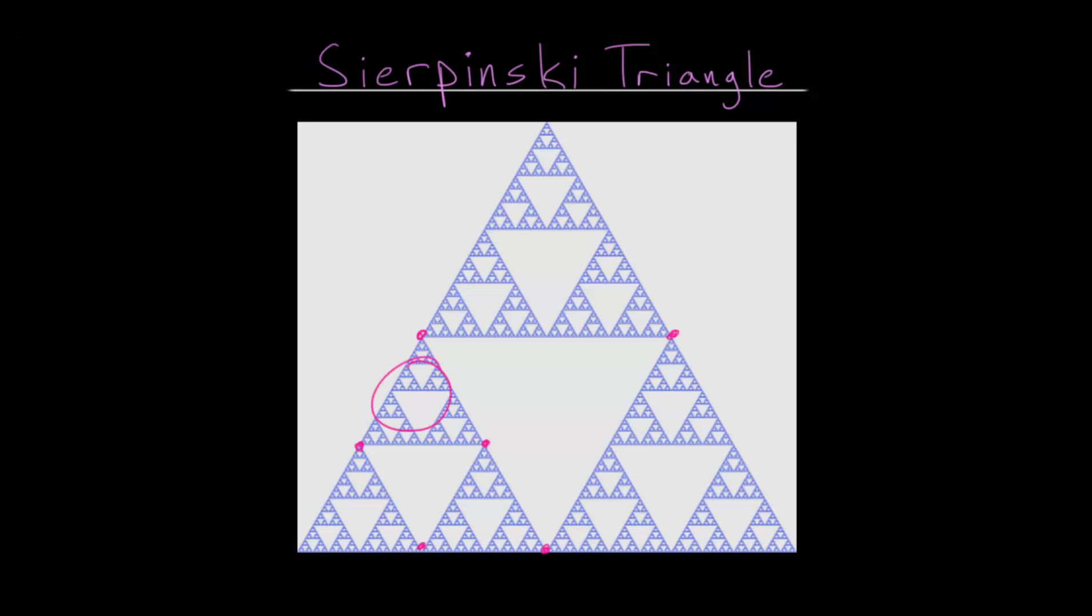And then this process is repeated to infinity. Essentially, for every one of these equilateral triangles, you will find the midpoints of each side, connect lines to those midpoints, and then remove that middle equilateral triangle. And this fractal has many interesting properties, but let's get a better idea of how this works.